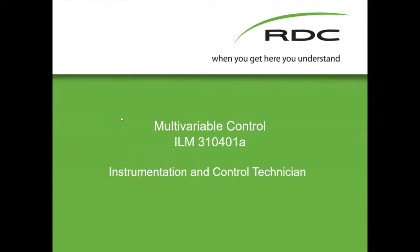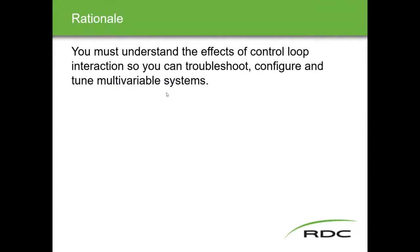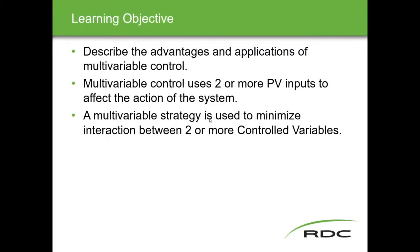The way that it's going to be described to you is going to be much more complicated. So let's have a look — why do we need to know this? You must understand the effects of control loop interactions so you can troubleshoot, configure, and tune the multi-variable system. The difference between multi-variable and ratio is this definition of interaction: if I make a change on one, does it change the other?